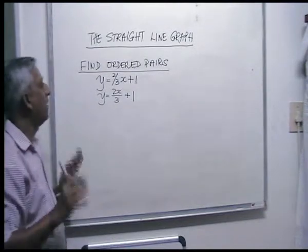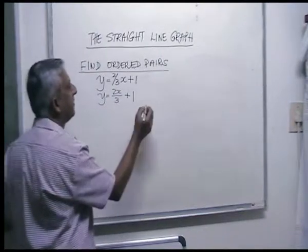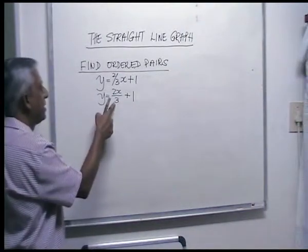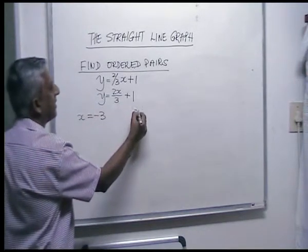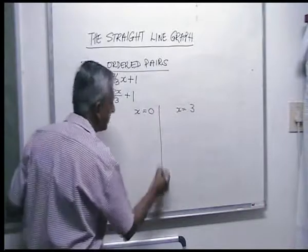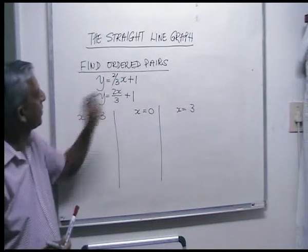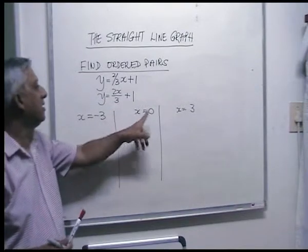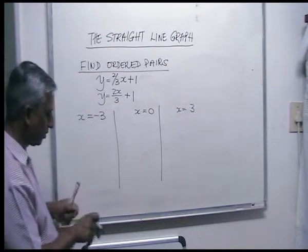The denominator is three, so let x be minus three, let x be zero, and let x be three — so that things work out nicely. You've got the denominator three, so choose minus three, zero, and plus three to make your working easy.